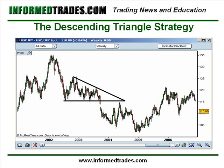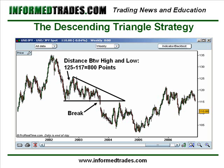Here's our descending triangle — same one from last lesson. We see the break here. We measure the distance between the high and the low at the start of the pattern and we get 800 points. So that's our target for the trade. And then we place our stop just above the most recent peak.